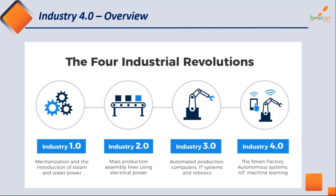As Industry 2.0 reached its peak, automation and robotics were needed to carry out manufacturing processes continuously with more accuracy, precision, and time savings. Industry 3.0 came into the picture when automated production and computer IT systems arrived and helped the manufacturing industry produce goods with more accuracy and precision.